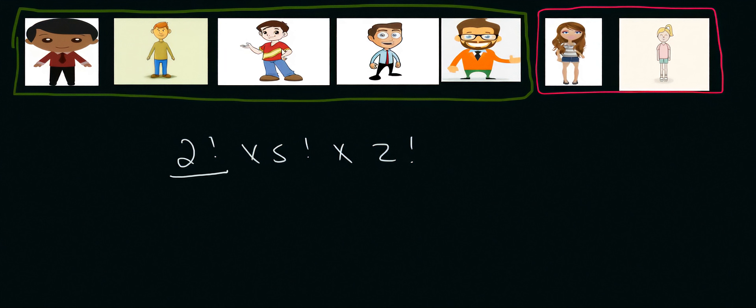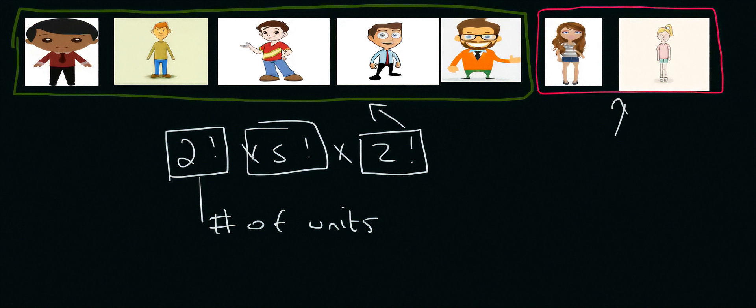What we said was that this part here was due to the number of units. Remember, each of these was a unit. The boys were a unit, and the girls were a unit. Then, within the boys, there were 5 people, and that's where this one came from. And then, within the girls, there were 2 people, and that's where that came from. Of course, you could have done the girls first, so that would have become a 2, and that would have been a 5. But when you're multiplying, the order doesn't really matter.